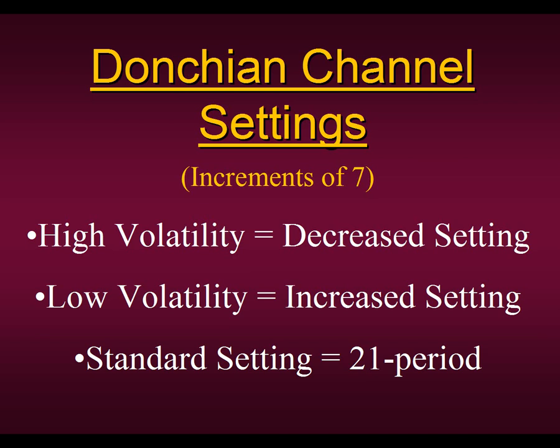In periods of low volatility — which happens many times in the summer months or during the holidays where there's not much movement at all — the volatility has decreased, so we increase the setting. We'll go from a 21-period to a 28 to a 35 and so on. When the markets are behaving normally, not too much low or high volatility, we use our standard setting of 21-period. It was my mistake that when I originally gave the rules and constructed the video for the Donchian Channel, the markets were in a high volatility period, so we had decreased settings of 14. Since then, things have balanced out and we've gained stability, so we're using the standard 21-period.